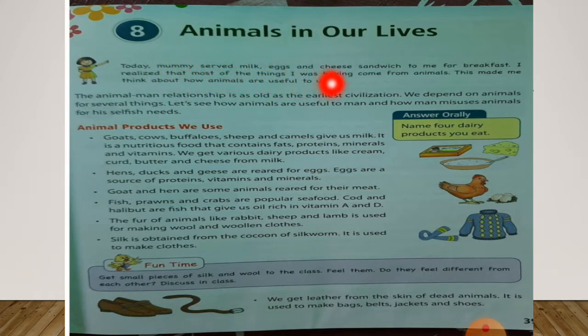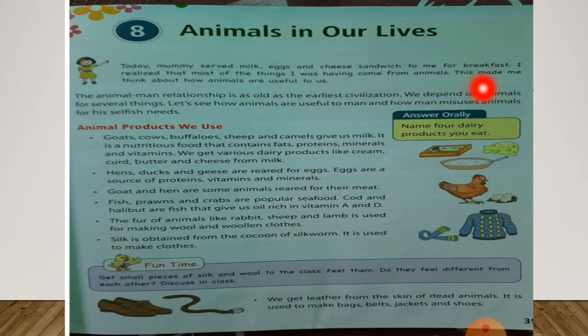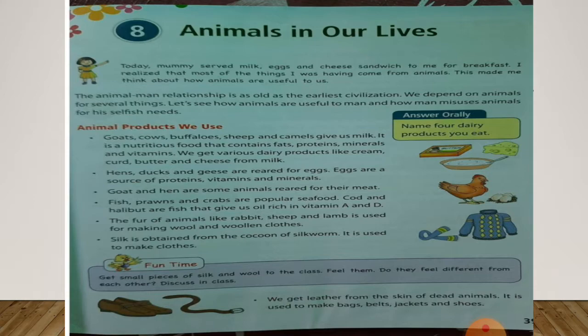...eggs and cheese sandwich to me for breakfast. So Ria is telling us that today her mother served milk, eggs, and cheese sandwich to her for breakfast. She realized that most of the things she was having come from animals, and this made her think about how animals are useful to us.